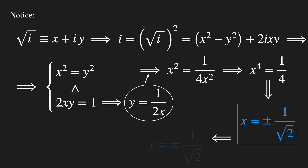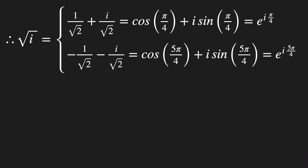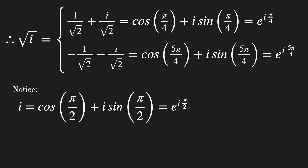Substituting this result back into the second equation, we find that y is also plus or minus 1 over the square root of 2. So we found two solutions for the square root of i. We can easily see, using Euler's formula, that these two roots correspond to the points on the unit circle with angles pi over 4 and 5pi over 4.